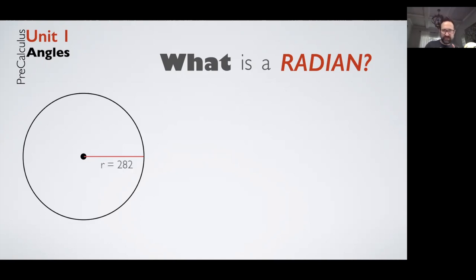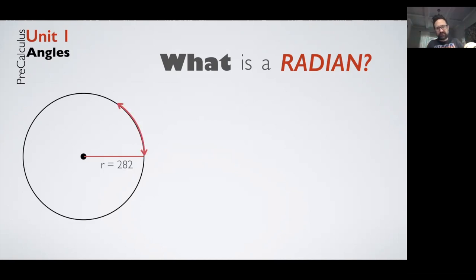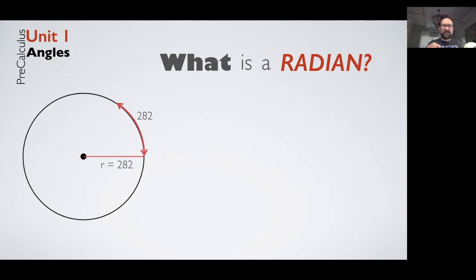If you were to tell me the specific radius of a circle — let's say 282 centimeters — and I wanted to create an exact measurement every time, I could mark off measurements around a circle consistently, no matter how big or small the circle is. If I take that radius measurement and make that same measurement around the edge of the circle, and the radius and the arc distance match exactly, I create a central angle at the center of the circle that is always consistent. This is what we call the radian measure.